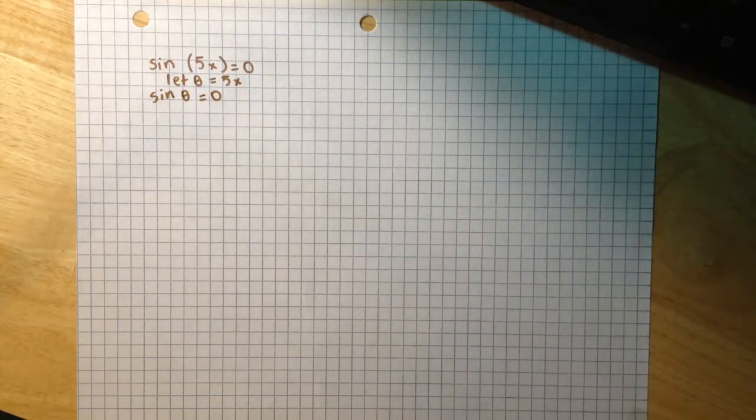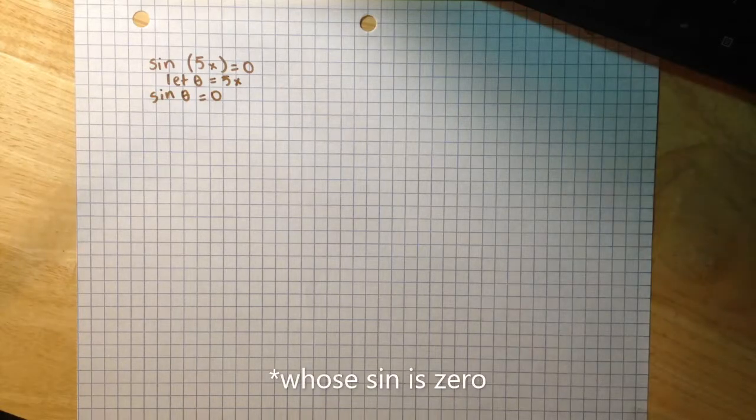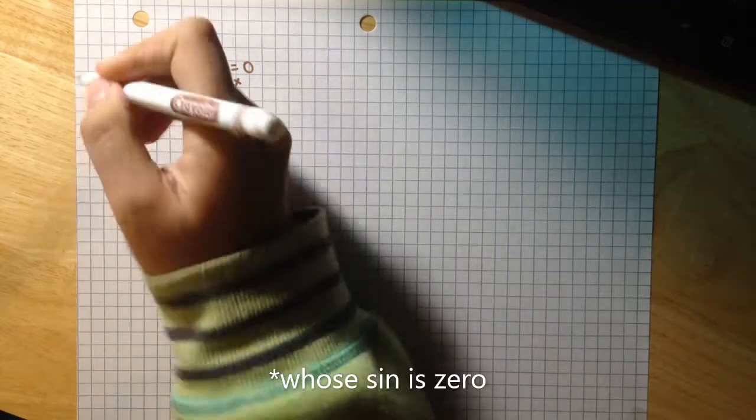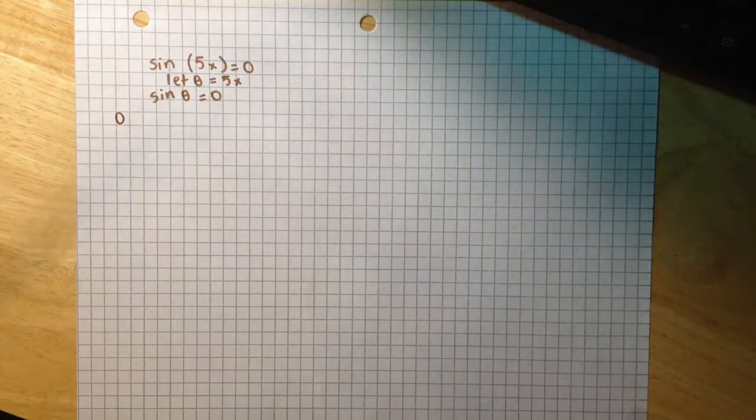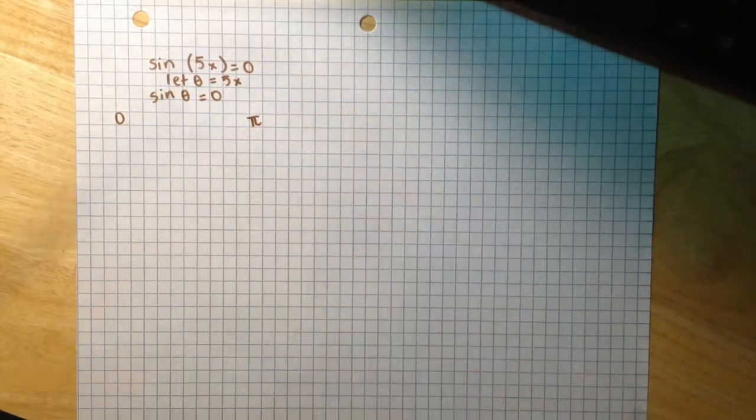Looking at our unit circle, we see that there are two angles whose sine is 0: 0 radians and π radians.